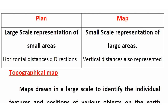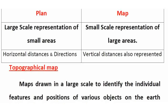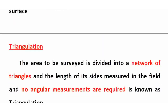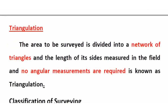Next is topographical map. Topographical map means maps drawn to a large scale to identify individual features and positions of various objects on the earth's surface — both artificial and natural features such as river, valley, building, railway, road, etc. They represent all natural and artificial features graphically. Next is triangulation: the area to be surveyed is divided into a network of triangles. The sides of triangles are measured in the field with no angular measurement.